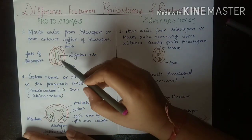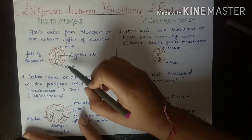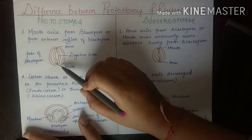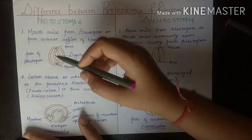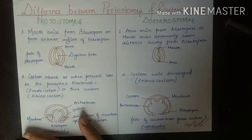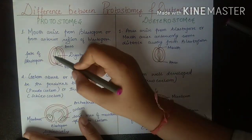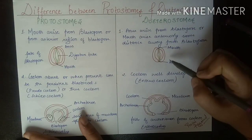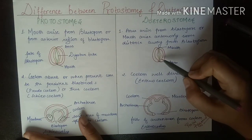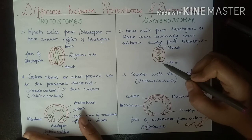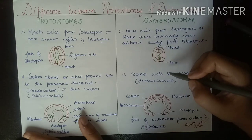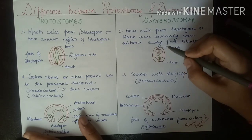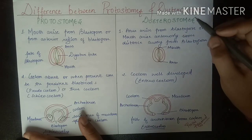The fate of blastopore in protostomes is the mouth — the origin of the blastopore is your mouth, and anterior to the mouth is the anus. This is your digestive tube. In deuterostomes, the fate of blastopore is the anus, meaning the anus originates from the blastopore and anterior to that is your mouth.